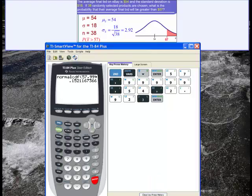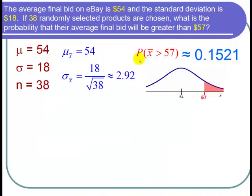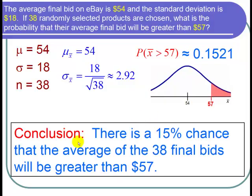So now let's get back to our PowerPoint. So the probability that X bar is greater than 57 is about equal to 0.1521. So I'm ready to state my conclusion. I can conclude that there is about a 15% chance that the average of the 38 final bids will be greater than $57.